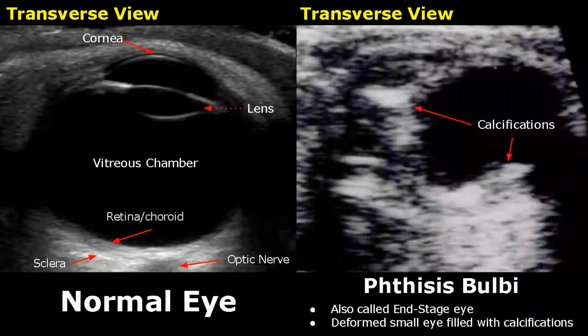Phthisis bulbi, also called end-stage eye, is a non-functioning eye. The eye is small, deformed, and filled with calcifications. It occurs after a severe eye injury.